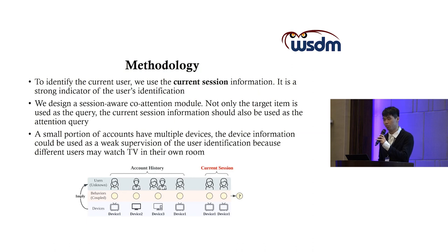Finally, a small proportion of accounts has multiple devices. The device information could be used as weak supervision of user identification because different users may watch TV in their own room. For example, television A is in my father's room, television B is in my mother's room, and television C is in the living room. The three televisions share the same account, the family account, but the three televisions can also have their own device ID. Since I can only watch TV in the living room, the device ID of the TV in the living room may contain my information. But since my father and mother can also watch TV in the living room, the device ID may be a signal, but only a weak one. So instead of using it as direct supervision, we choose to use it in an attention module.